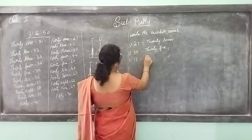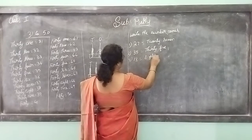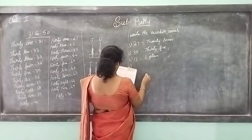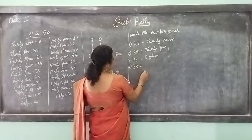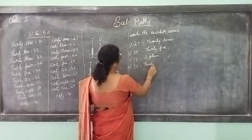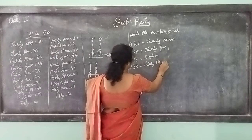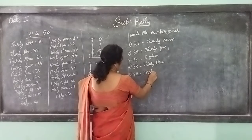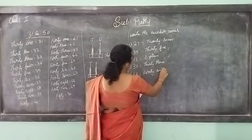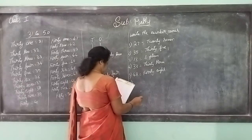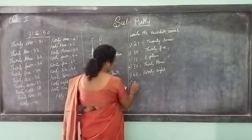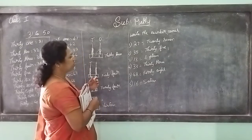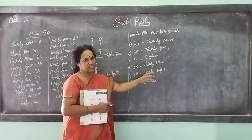This one is 18 - E-I-G-H-T-E-E-N, 18. This one is 33 - T-H-I-R-T-Y T-H-R-E-E, 33. This one is 48 - F-O-R-T-Y E-I-G-H-T, 48. 16 - S-I-X-T-E-E-N, 16. OK children, write the number names. They will find the numbers which you write in words like this.